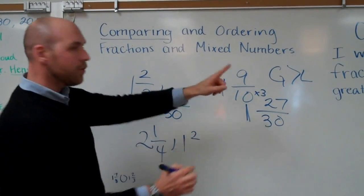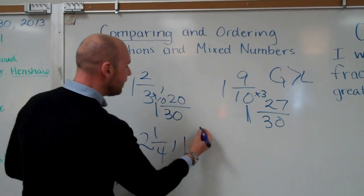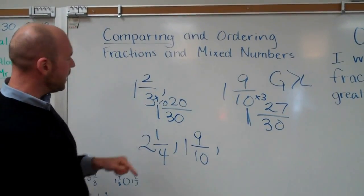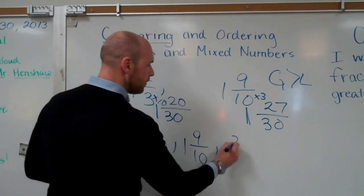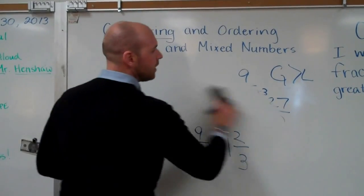Oh no, I'm doing it greatest to least. See? I know that one and nine-tenths is my middle mixed number. And then my least number is one and two-thirds. And then I can get rid of all that rest of that stuff.